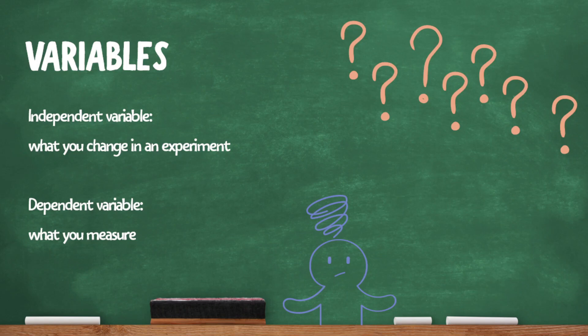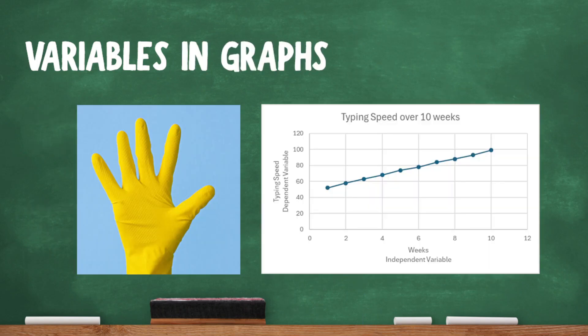Let's review how to identify the independent and dependent variable in a graph. If you put your hand up along the graph with your finger sticking up and your thumb pointing to the right, your thumb is independent from your other fingers. So the horizontal axis is the independent variable and the vertical axis is the dependent variable.